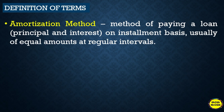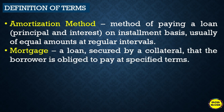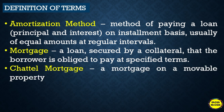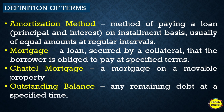Some definitions of terms: The amortization method is a method of paying a loan — both principal and interest — on an installment basis, usually of equal amounts at regular intervals. Mortgage is a loan secured by a collateral, so the borrower is obliged to pay at specified terms. Chattel mortgage is a mortgage on a movable property. The outstanding balance is the remaining debt at a specified time.